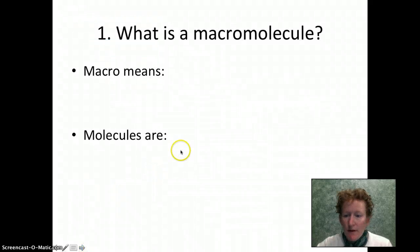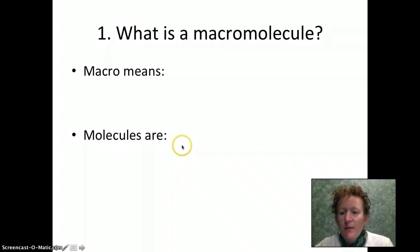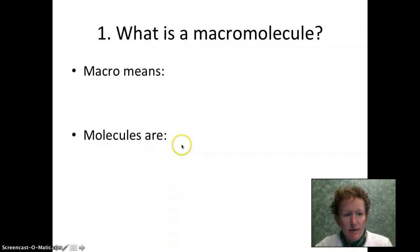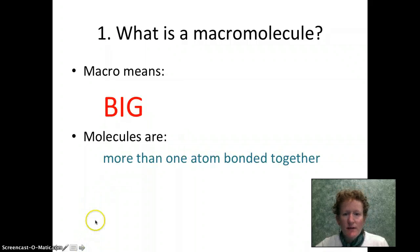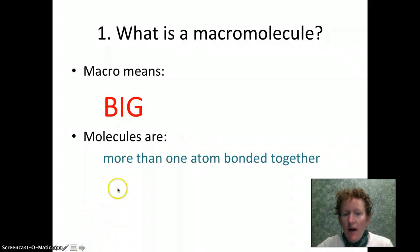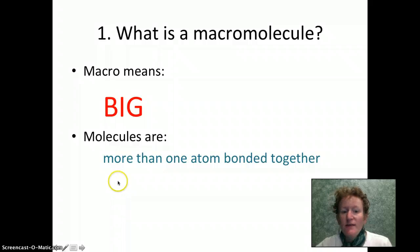What is a macromolecule? Well, a macromolecule - macro means big. Molecules are a bunch of atoms stuck together. So a macromolecule is a big bunch of atoms all bonded together.